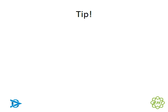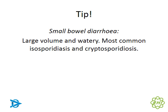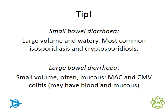The type of diarrhea helps identify the location. Small bowel diarrhea is large volume and watery, most commonly caused by isosporidiosis and cryptosporidiosis — these can be identified through history alone. Large bowel diarrhea tends to be small volume, more frequent, and contains more mucus. Both MAC and CMV colitis tend to attack the colon and therefore present with a large bowel pattern, distinguishable from isosporidiasis and cryptosporidiosis.